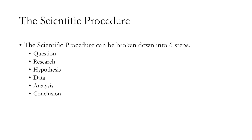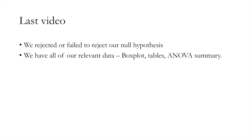We're finally at the end of the scientific procedure in terms of conclusion. We've looked at the other five steps, and conclusion is just another way we're going to present the results that we found in the virtual hides. In the last video we rejected or failed to reject our null hypotheses, and we've collected all of our relevant data and did some analysis. By now you'll have a box plot, some tables, and an ANOVA summary table.